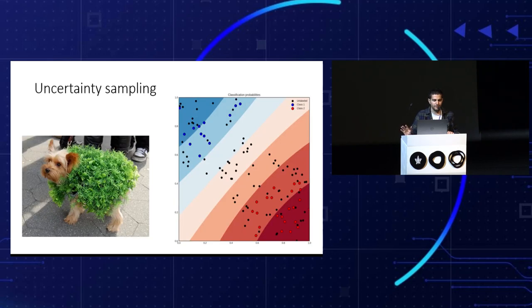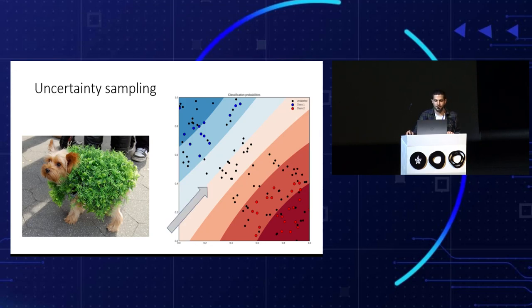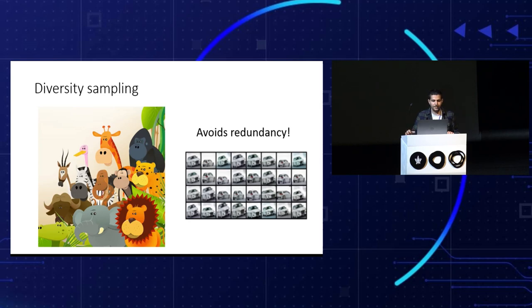Let's talk about some prior work — leading principles in active learning. One principle is uncertainty sampling, where we select samples that the model is least confident about. In this example, some samples are already labeled in blue or red, and the black ones are unlabeled. In uncertainty sampling, we would select the samples closest to the decision boundary to be annotated. Another leading principle is diversity sampling, where we try to minimize the correlation between samples we annotate, to avoid redundancy, because labeling two very similar examples gives little added value.